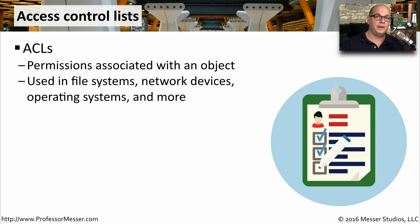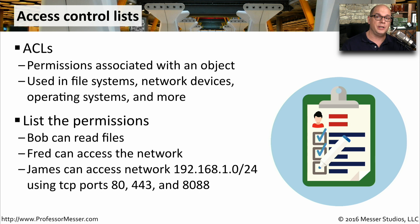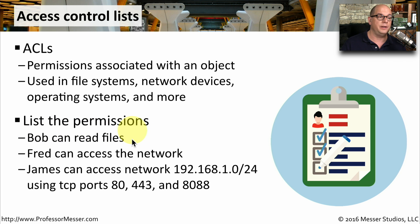An access control list is a very broad term that describes the permissions associated with an object. You may hear these referred to as ACLs, and you'll see them used in file systems, network devices, firewalls, operating systems, and much more. The implementation of the access control list differs depending on where it is. If it's in a file system, the ACL may simply say that Bob can read files. If it's on a network device, it may say that Fred can access the network.